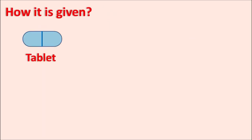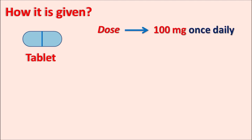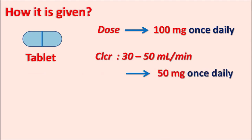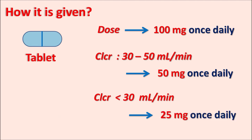Cetagliptin is given as a tablet. The standard dose is 100 mg once daily. In patients with renal impairment, the dose is adjusted based on creatinine clearance: when clearance is between 30 and 50 mL/min, the dose is reduced to 50 mg once daily; when clearance is less than 30 mL/min, the dose is further reduced to 25 mg once daily.